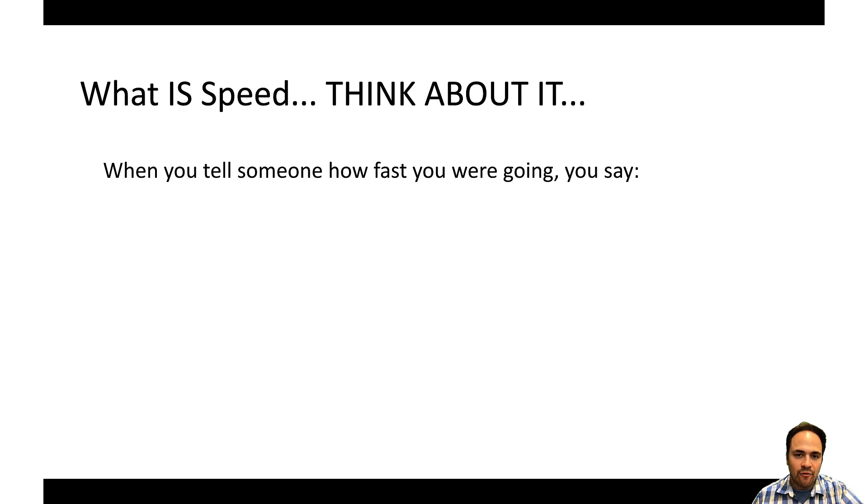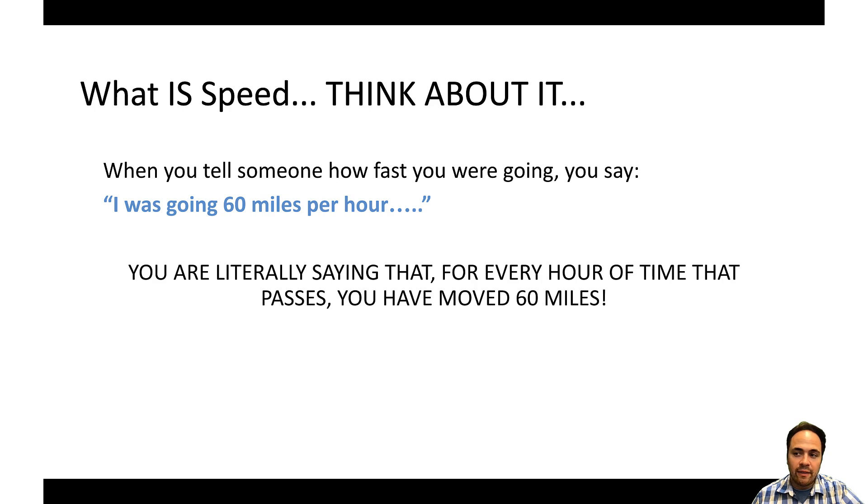When you tell somebody how fast you're going, you usually say something like, I was going 60 miles per hour, 60 mph or however you put it. And thinking about that literally, you're literally saying that for every hour that goes by, you travel 60 miles. So if you travel for an hour, you've gone 60 miles of distance. If you travel for two hours, you go another 60 miles or 120 miles of distance. So you're just telling somebody how far you went and how long it took.